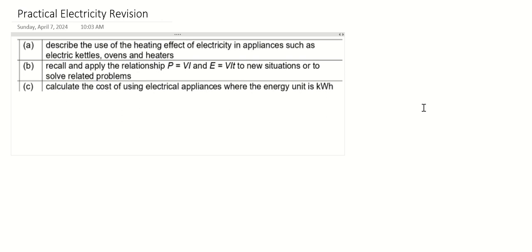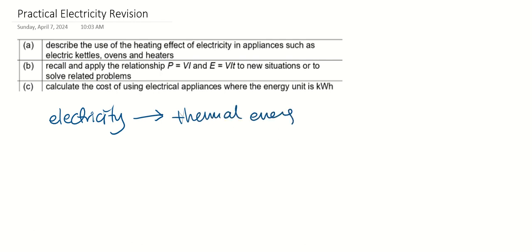These are the success criteria: describe the use of the heating effects of electricity in appliances such as electric kettles, ovens and heaters. As you know, electricity can be converted to other forms of energy. One example is electrical energy can be converted into thermal energy, or even light energy.